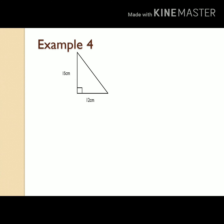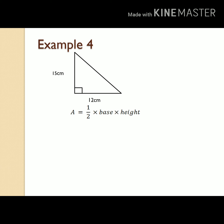Example number four: we have a right-angled triangle with dimensions — height 15 centimeters and base 12 centimeters. As we have agreed in the above examples, finding the area of the triangle we take one half times base times height, or one half bh. Let us put the numbers into the formula: one half times 12 cm times 15 cm. Fifteen times 12 is 180, divided by 2 we get 90. So the area is 90 square centimeters.